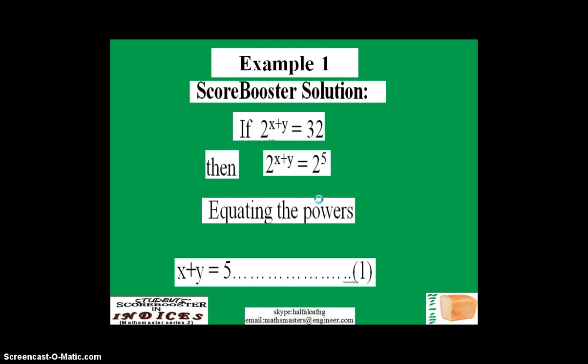So the solution goes thus: This is the first equation that we are given. If 2 raised to power x plus y equals 32, by factorizing 32, we're gonna have 2 raised to power x plus y equals 2 raised to power 5.